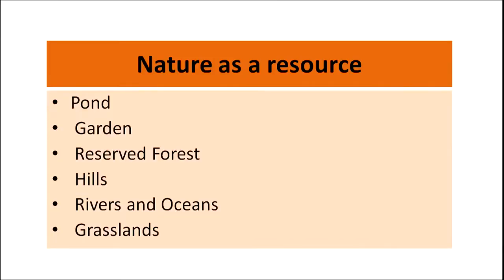The other category of resource is nature. As you all know, EVS is all around. So nature as a resource is very powerful in EVS. Pond, garden, reserve forest, hills, rivers, oceans, grassland — they all become resources in EVS. It all depends where the school is located. If a school is located near a pond, then the pond is a very interesting resource in learning EVS. There are various life forms in the pond and around it, and students can observe a number of things. Any resource has multiple learning opportunities — it is the potential of the teacher to utilize those learning opportunities.